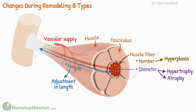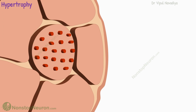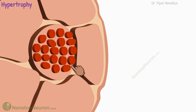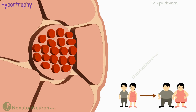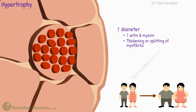First, hypertrophy — it means an increase in the diameter of the muscle fibers; it's like they get fatter. This is achieved by increasing the number of actin and myosin filaments in each muscle fiber. This process may involve thickening or even splitting of the myofibrils within the muscle fibers.